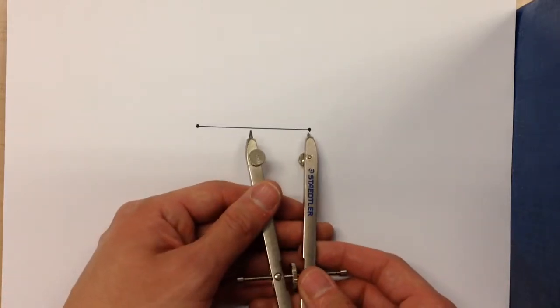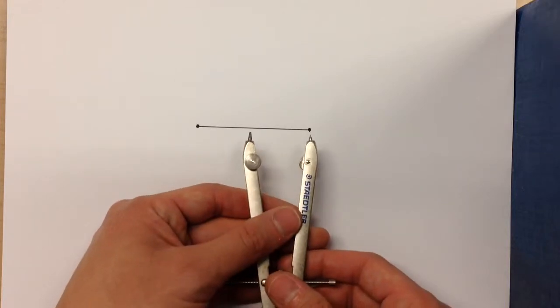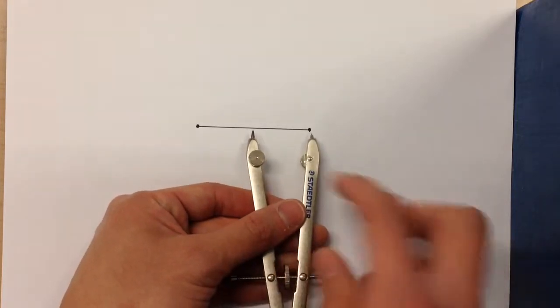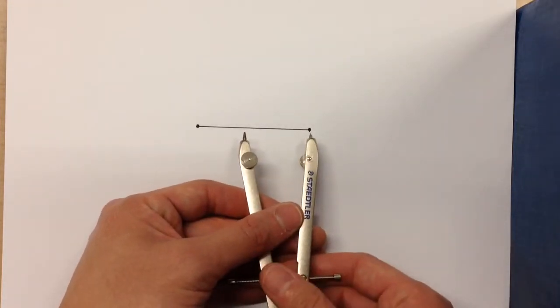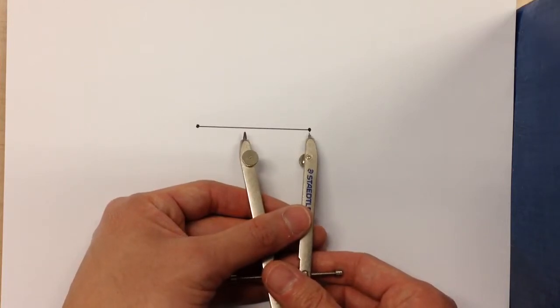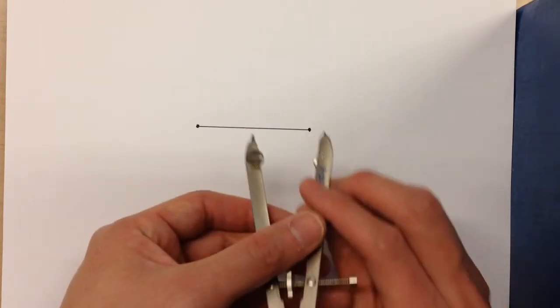So the first step is you're going to set your compass to a length that's more than halfway across your line segment. So that's pretty good right there.